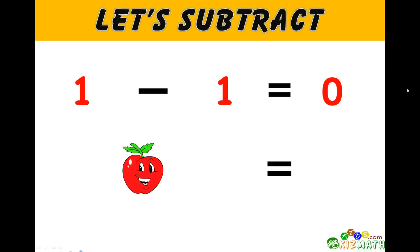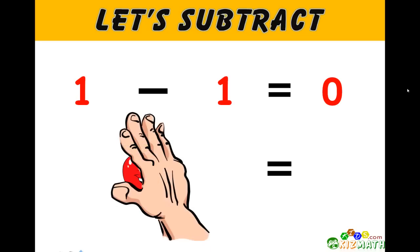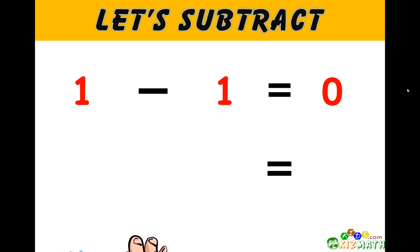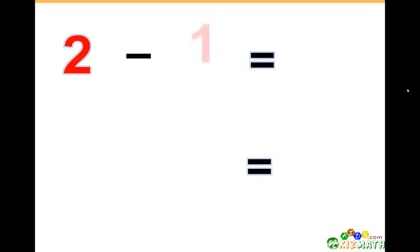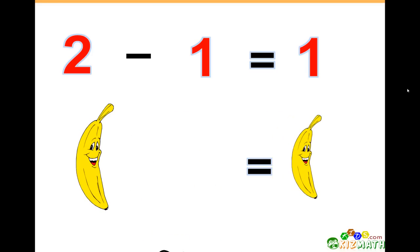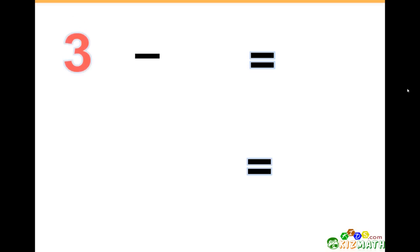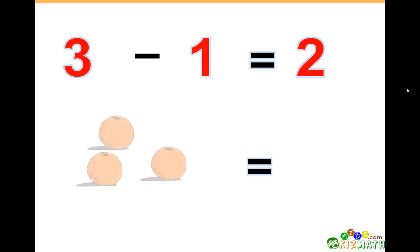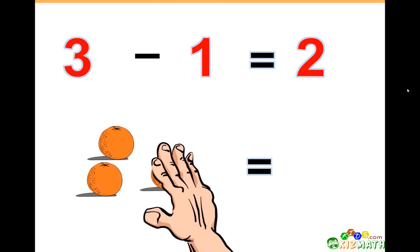Let's subtract. 1 minus 1 equals 0 — if we have one apple and we take away that one apple, we have zero apples left. 2 minus 1 equals 1 — if we have two bananas and we take away one banana, we have only one banana left.